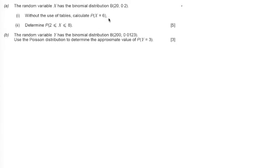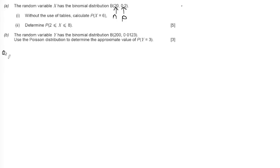In this question we're told the random variable X has the binomial distribution where n is equal to 20 and p is equal to 0.2. We're asked to calculate without the use of tables the probability that X equals 6. I'd recommend that even if it didn't say without the use of tables, you should be practising to use the formula for cases where it's 'equals' anyway.